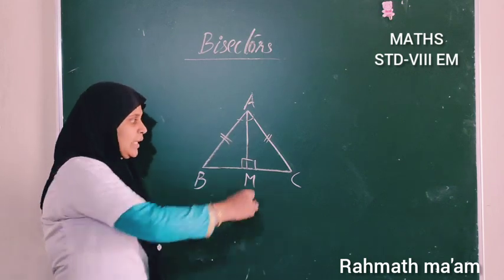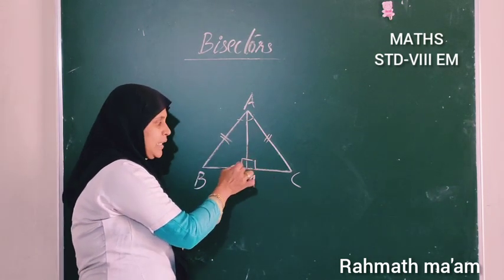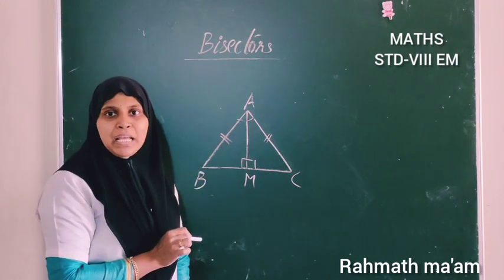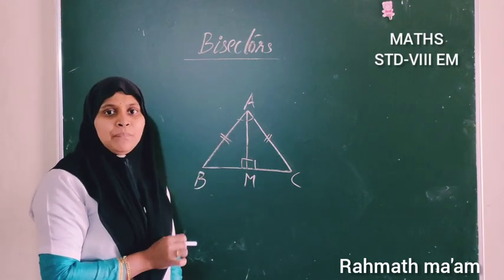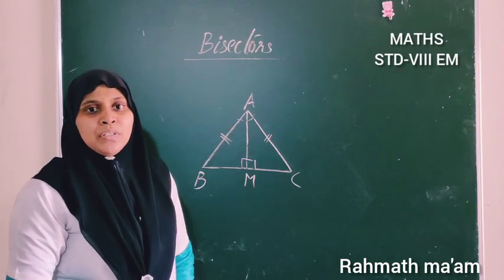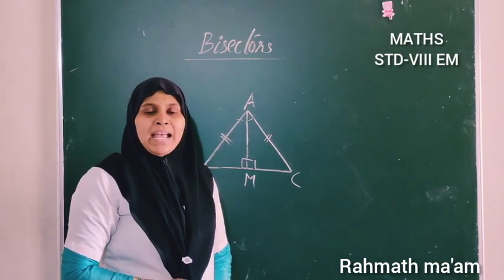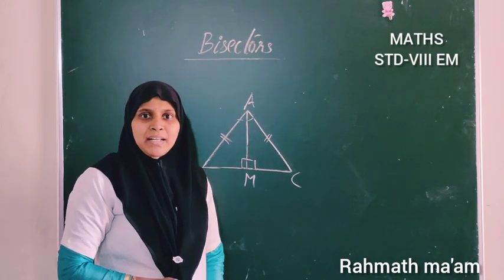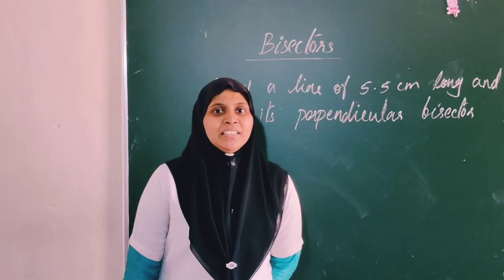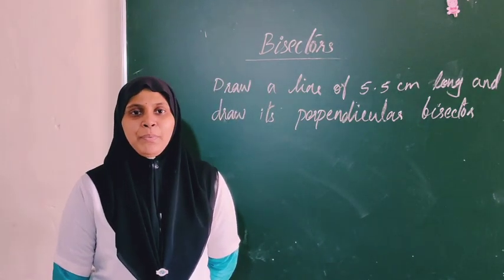The angle is 90 degrees, and AM is the perpendicular bisector. Now we are going to study how to draw an angle bisector and a line bisector. Here the question is: draw a line of length 5.5 centimeters and draw its perpendicular bisector.